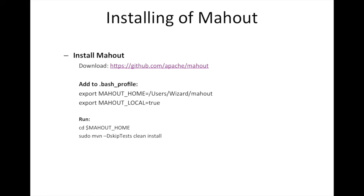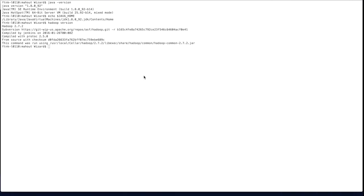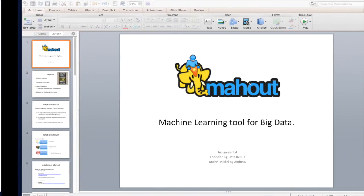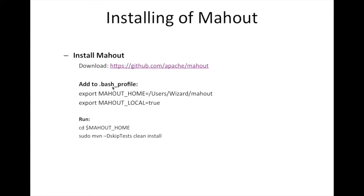Now that Hadoop is set up, you can start installing Mahout. We found the easiest way is to download Mahout from the GitHub repository as a zip, unzip it, and put it in the folder you want. Then add two lines to your bash profile: the MAHOUT_HOME pointing to your Mahout folder location, and set MAHOUT_LOCAL equal to true. To install, change directory to MAHOUT_HOME and run the install command with '-DskipTests' to skip the tests, which take a long time, and use sudo to ensure administrator rights.